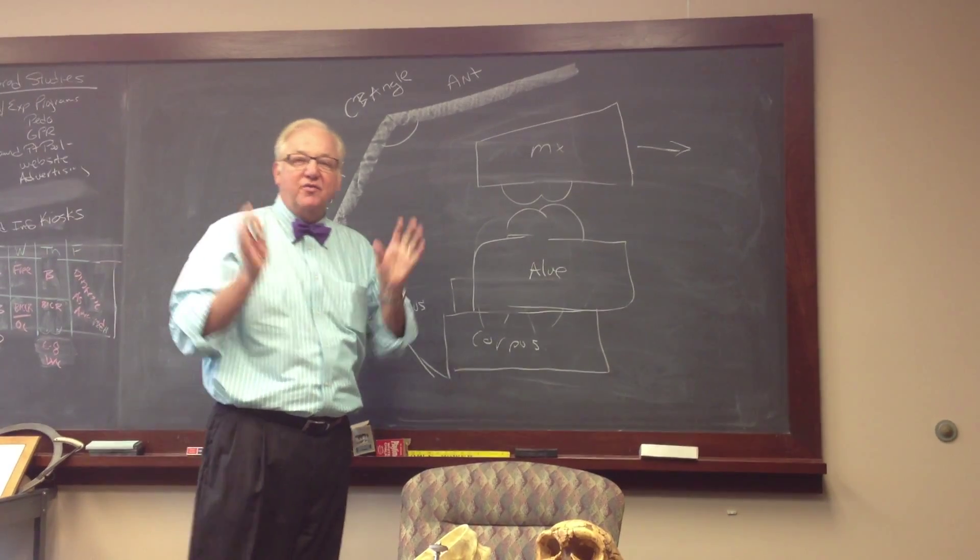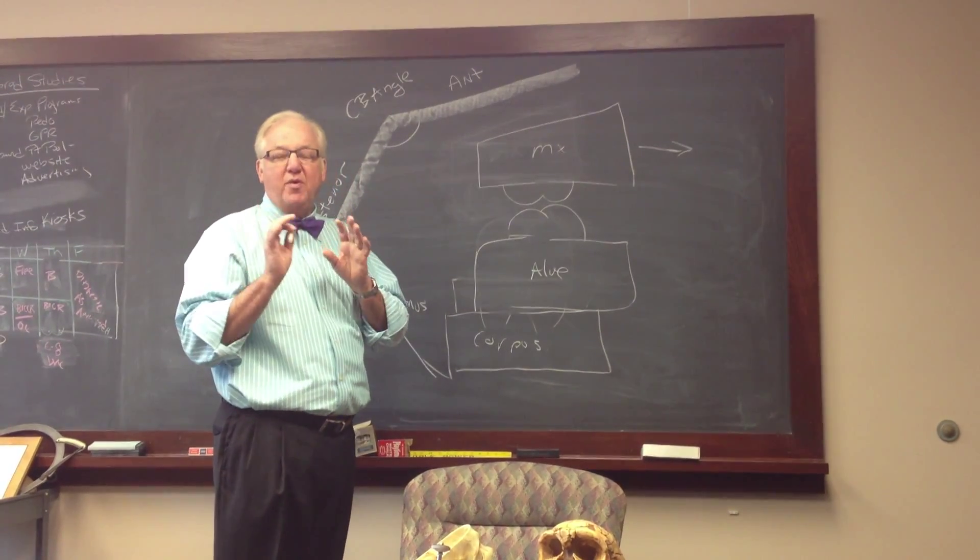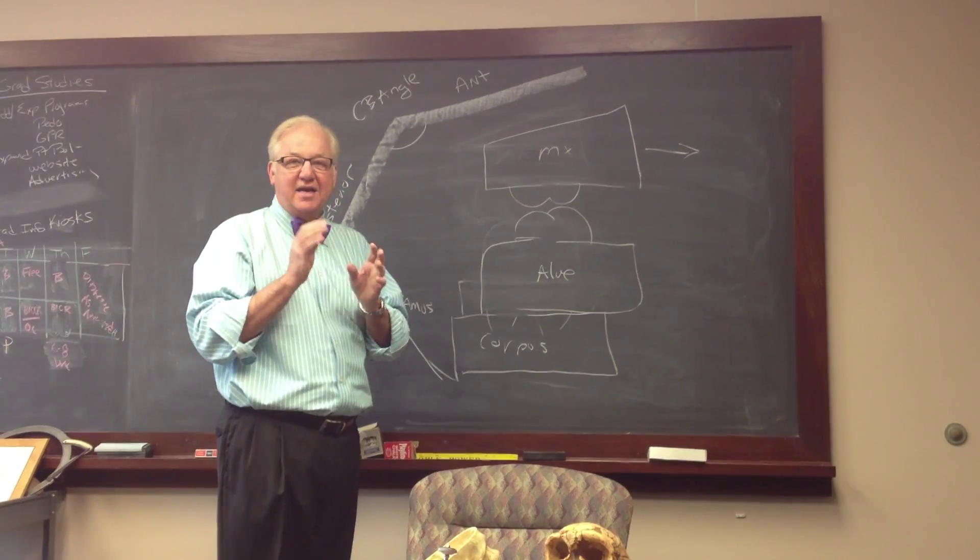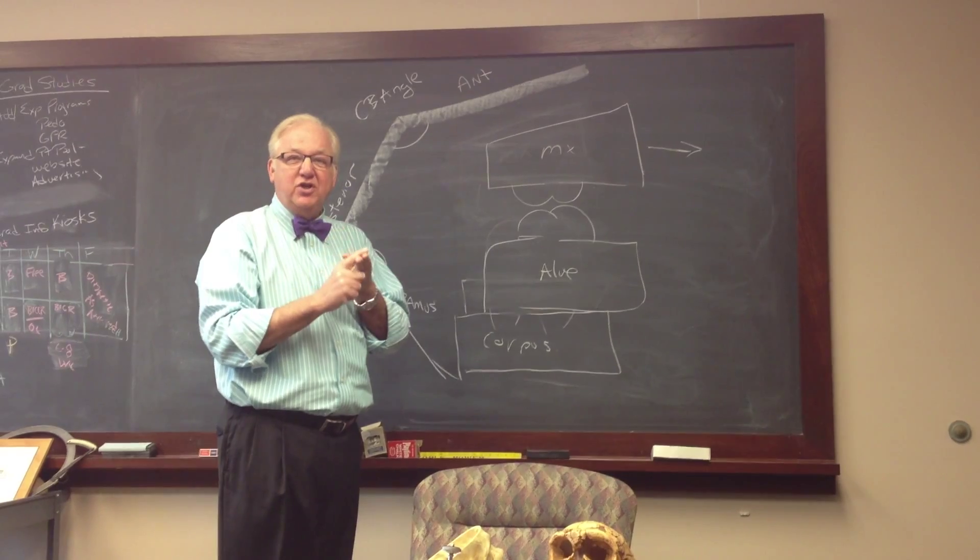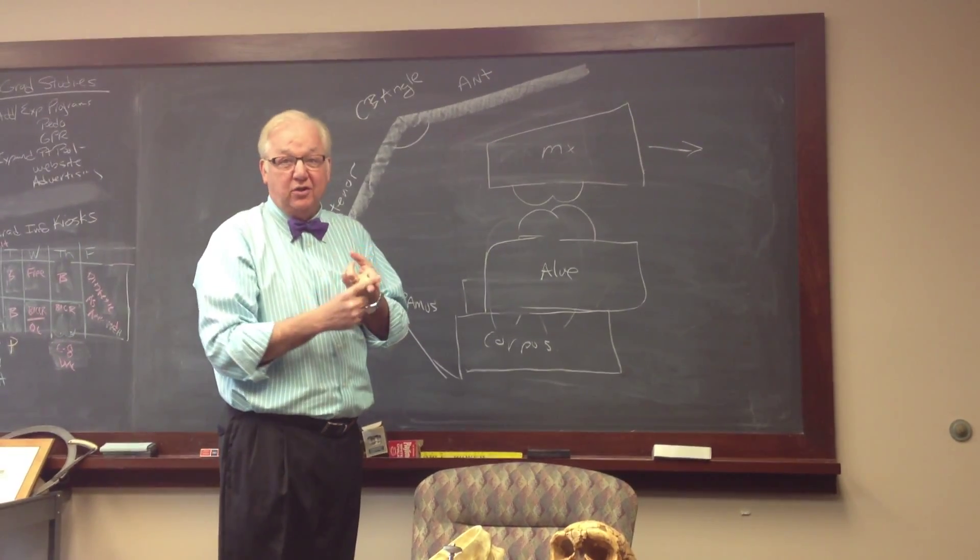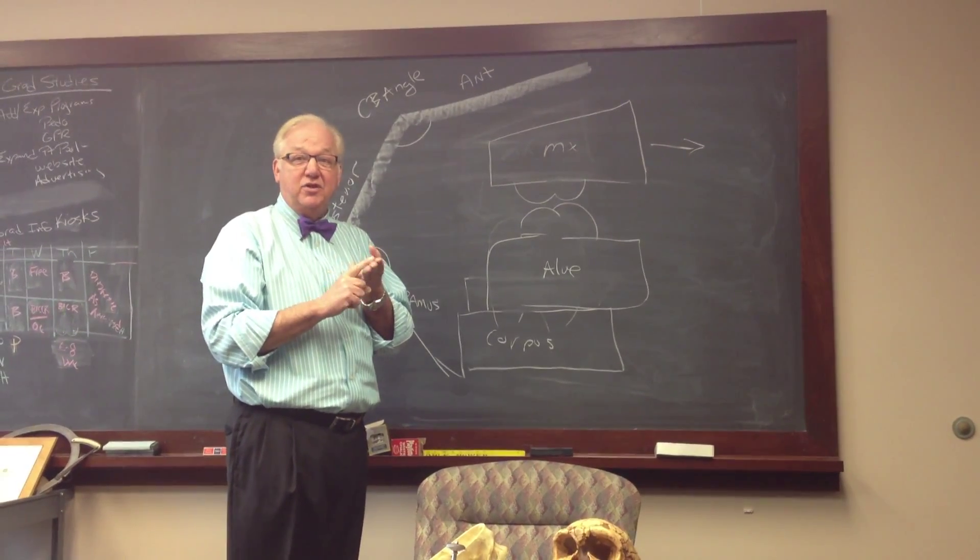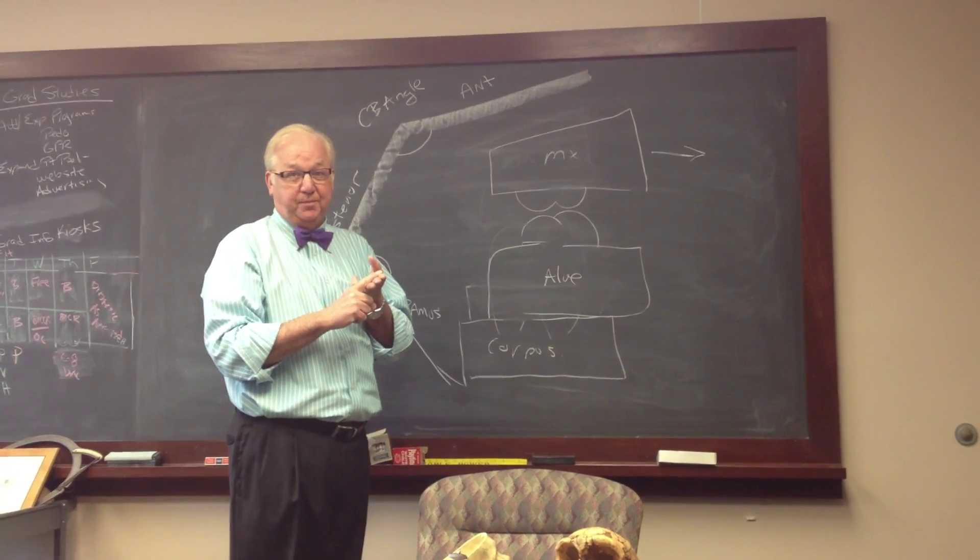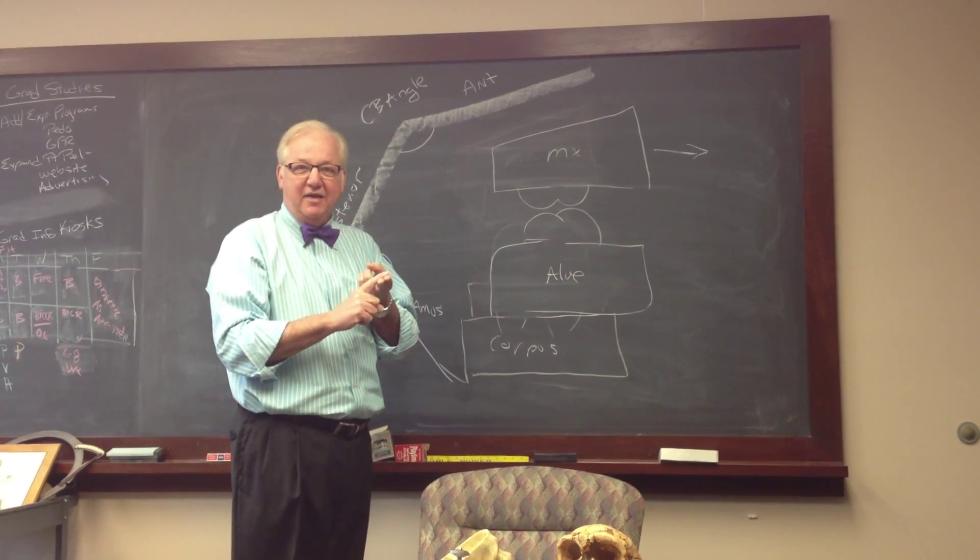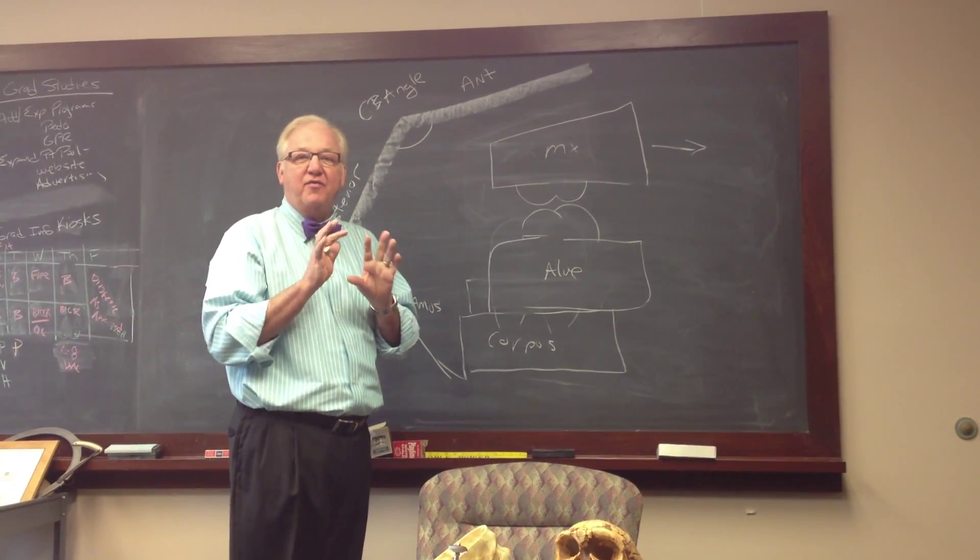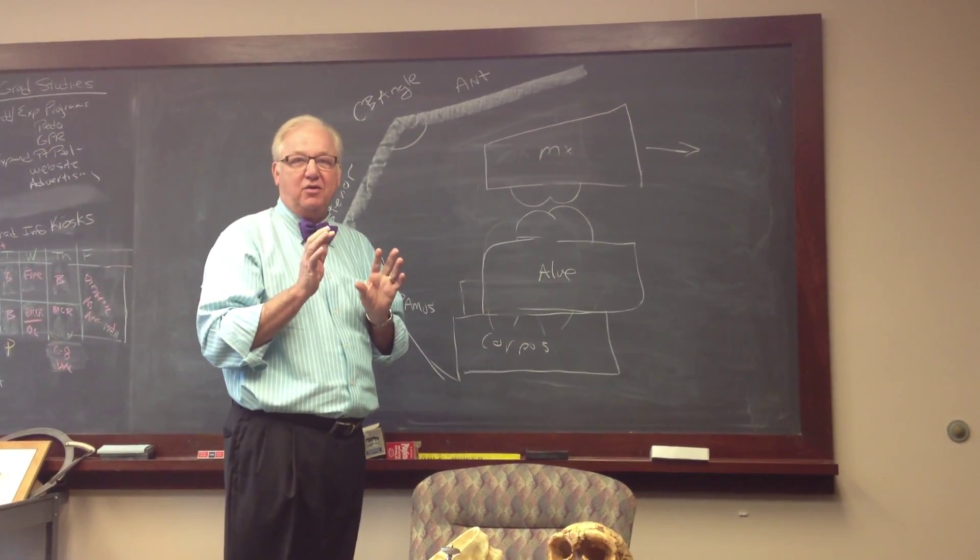And most of orthodontic treatment, most of what we do in the specialty of orthodontics is try to identify, one, where the compensations are. Which of these compensations are beneficial? Which of these compensations are not beneficial? And then decide what ones we can change, what ones we want to leave. And that is the art of modern diagnosis of malocclusion.